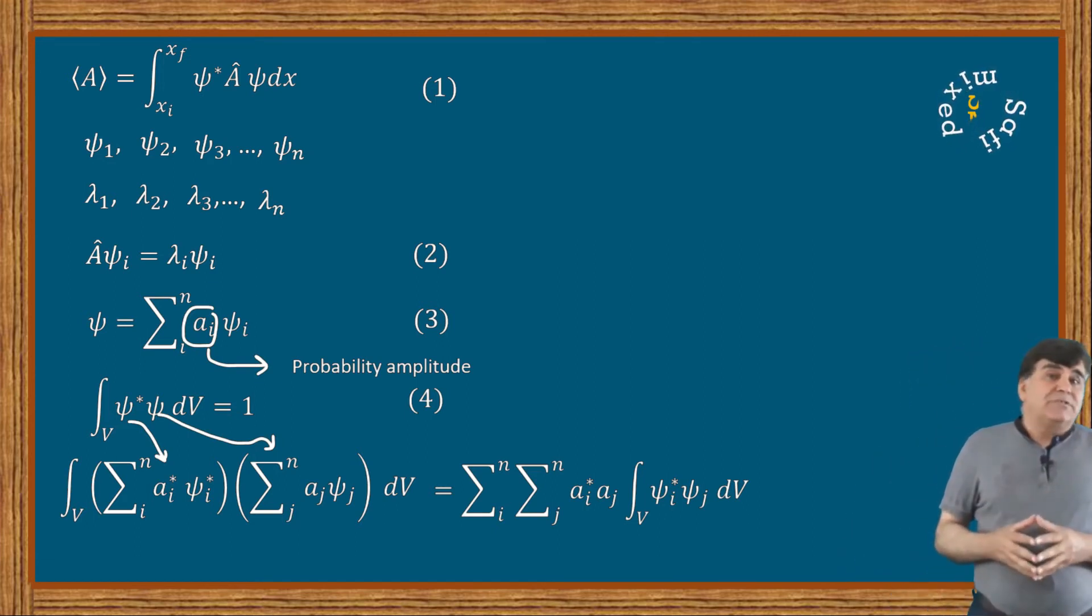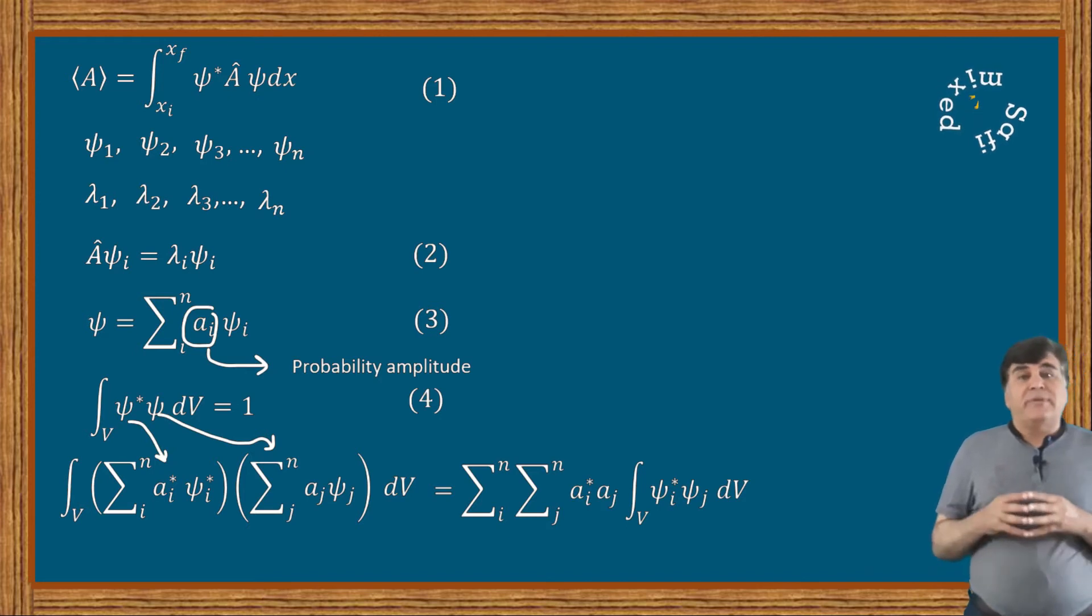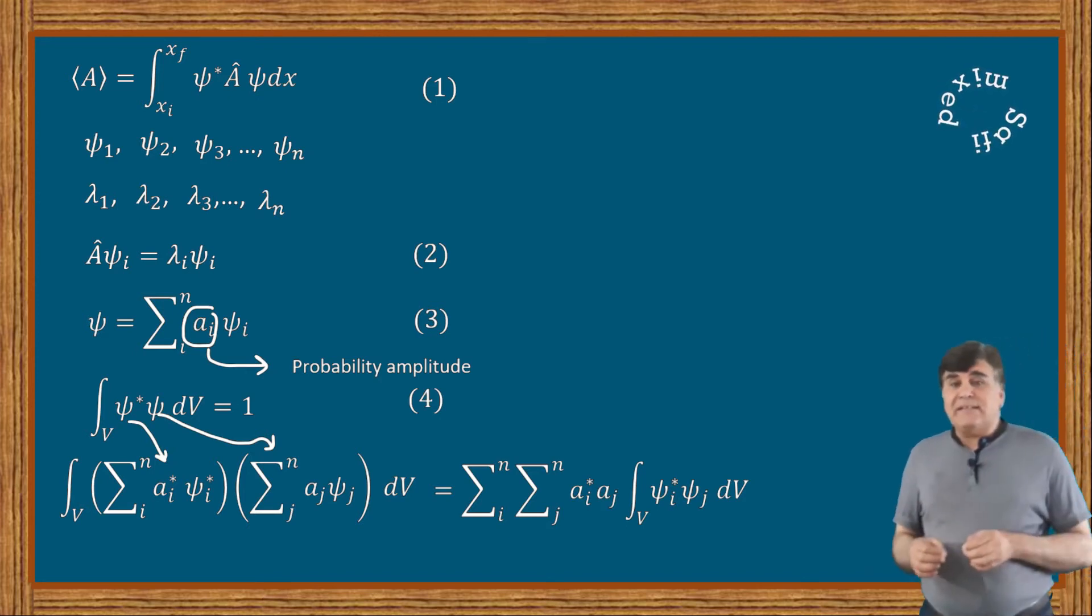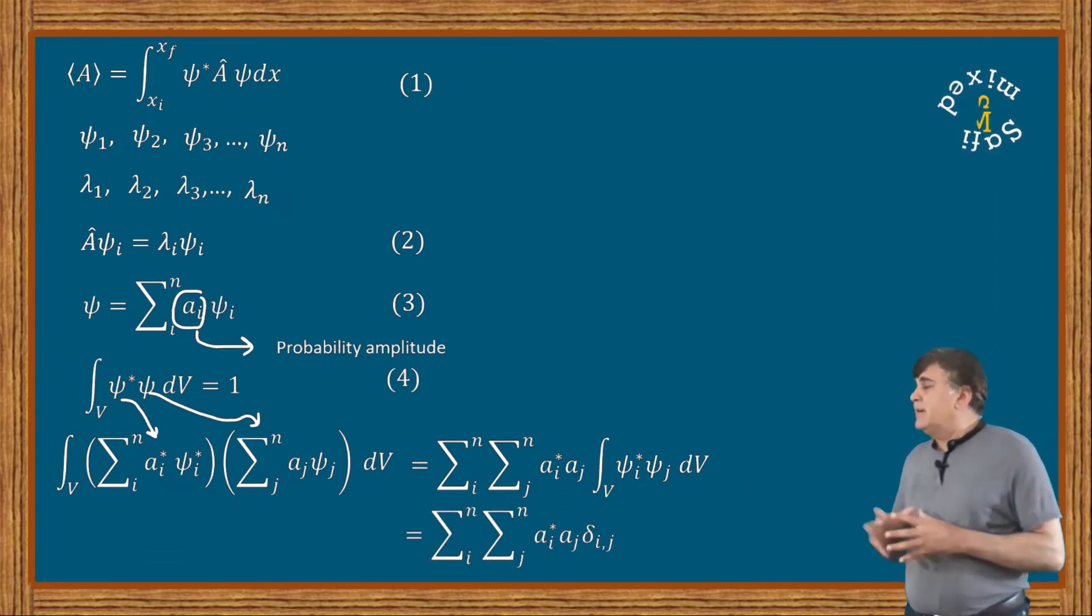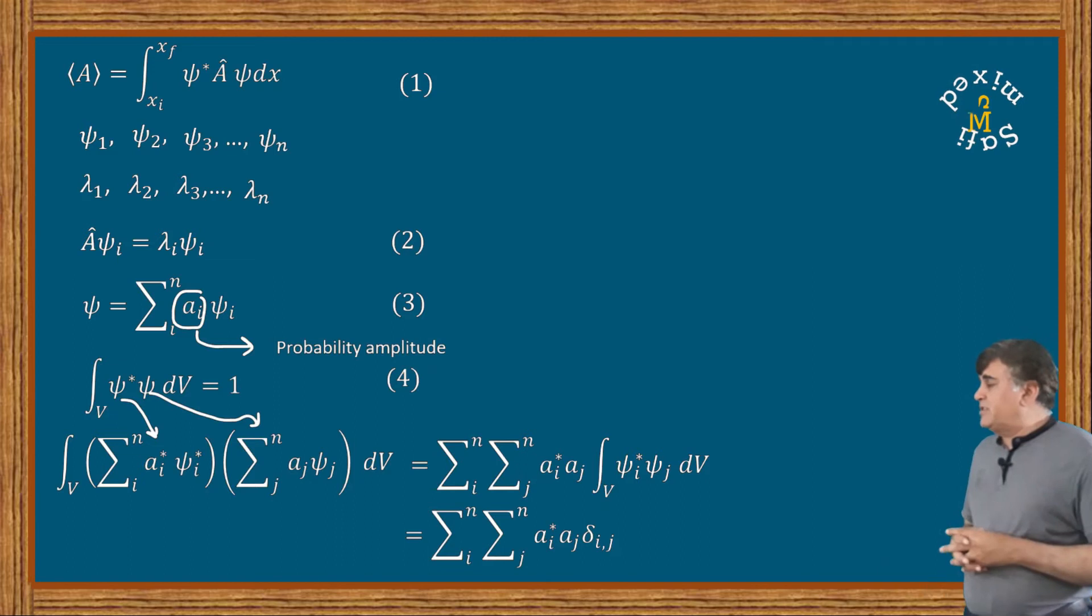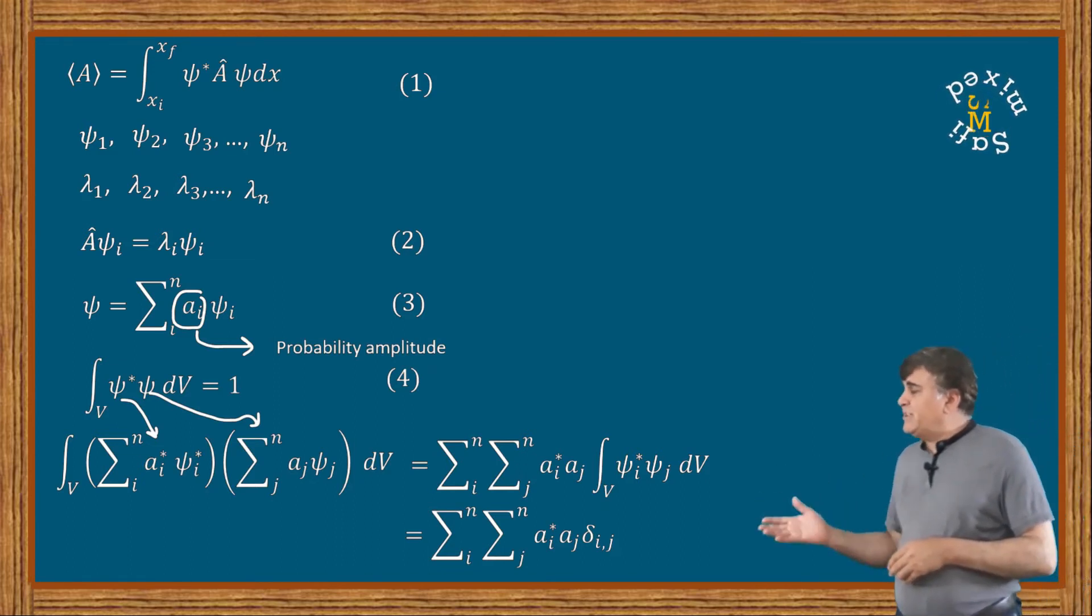Since the eigenfunctions must obey orthonormality condition, therefore the integral can be written in the form of delta function. And so I write the equation finally in the form summation over i, summation over j, aᵢ* aⱼ δᵢⱼ.